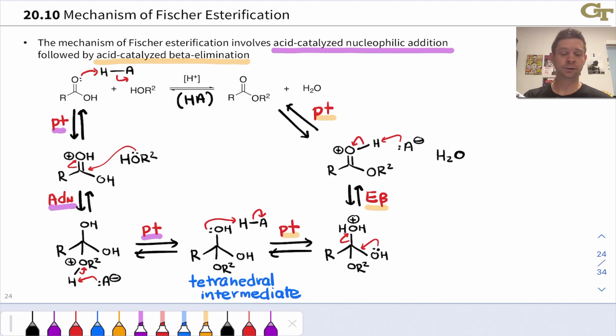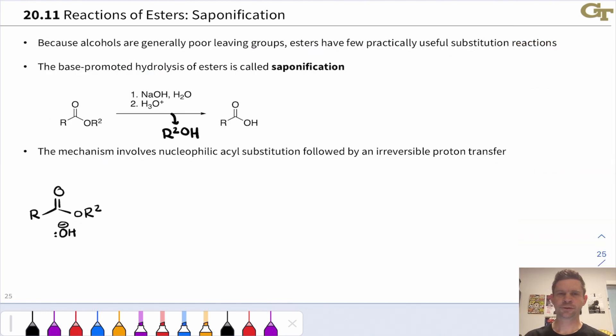All the steps are reversible. What's really driving this is the use of an excess of the alcohol, and in some cases, removal of this water byproduct in the beta elimination step. At the start of the video, we alluded to the fact that esters don't have a great leaving group linked to the carbonyl carbons, so they don't have a ton of practically useful substitution reactions. They're sort of limited in what they can do here.